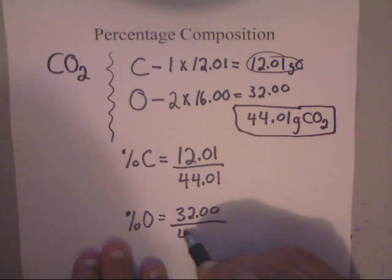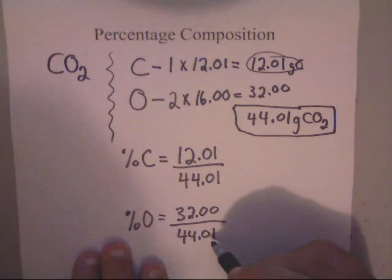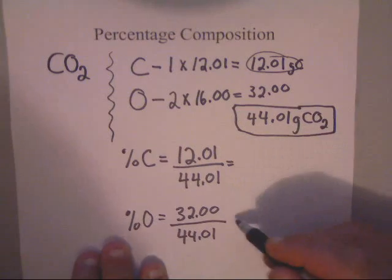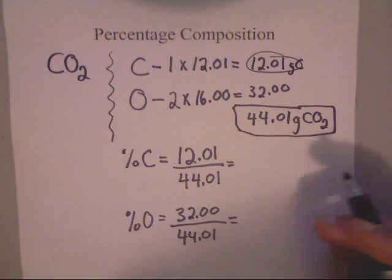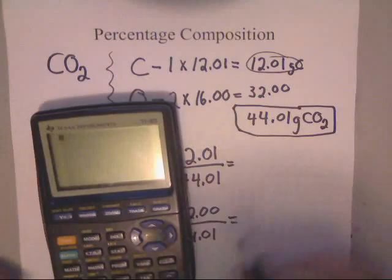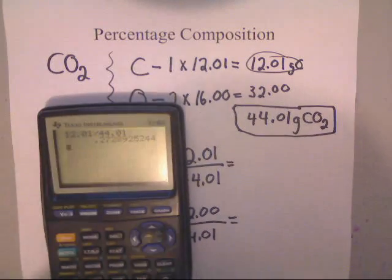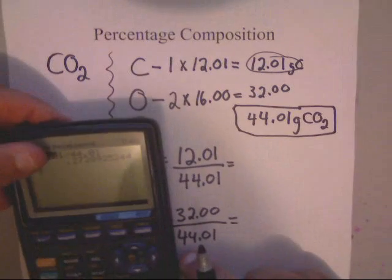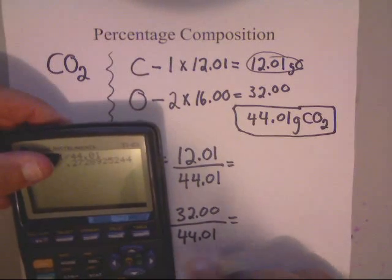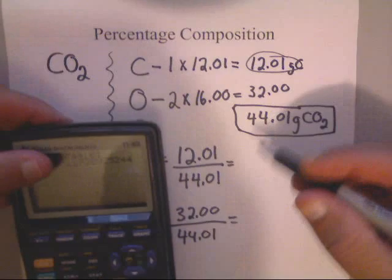Now get a calculator and punch these in. You've got 12.01 divided by 44.01 and you get this number here. I'm going to suggest going out to four decimals, four numbers behind the decimal, so this